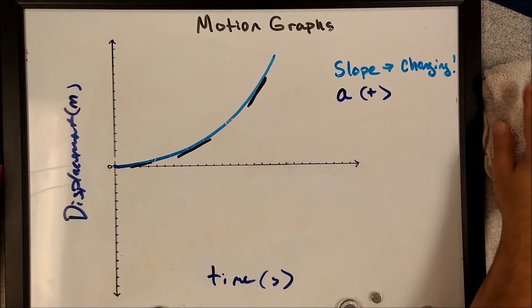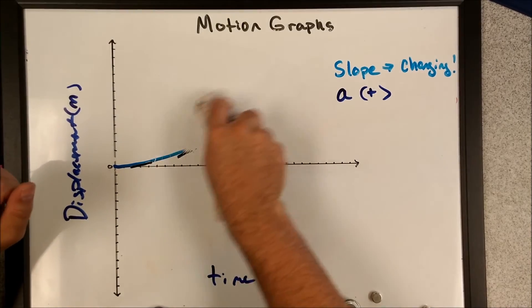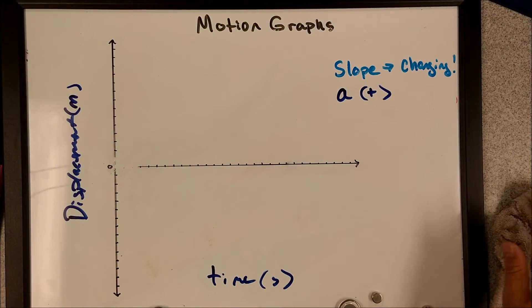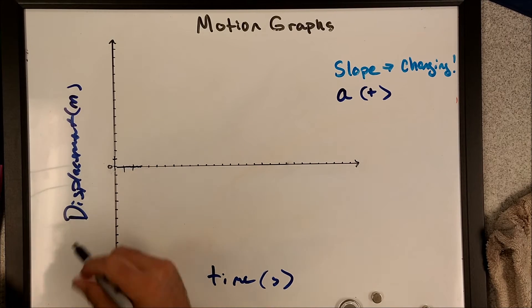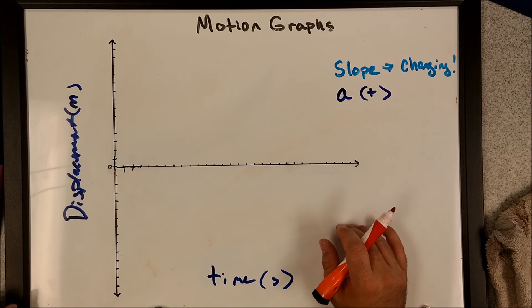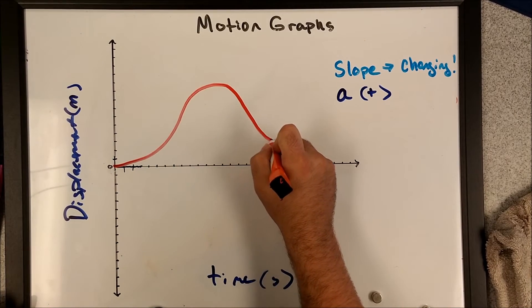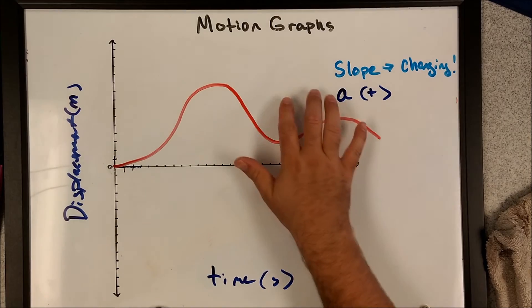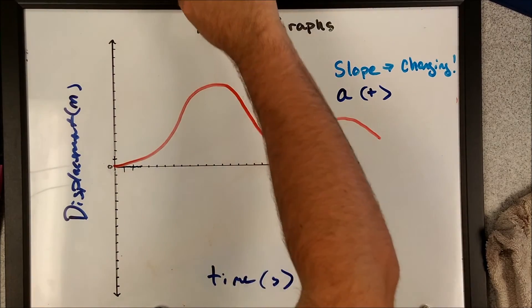Now, non-constant accelerations are very rare in physics. Let me just quickly try to show you what it may look like. That would be a scenario in which the curve will be a non-consistent curve. So maybe it starts off as a nice curve, and then it starts to change, and then it curves again.